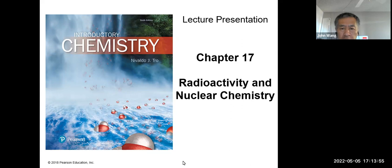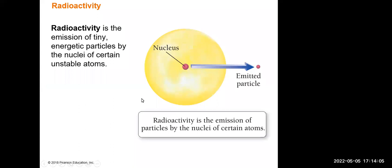This chapter is about Chapter 17: radioactivity and nuclear chemistry. We are going to briefly study the nuclear reactions associated with radioactivity. Radioactivity is the emission of tiny energetic particles by the nuclei of certain unstable atoms. The particle emitted can be an electron or something else.